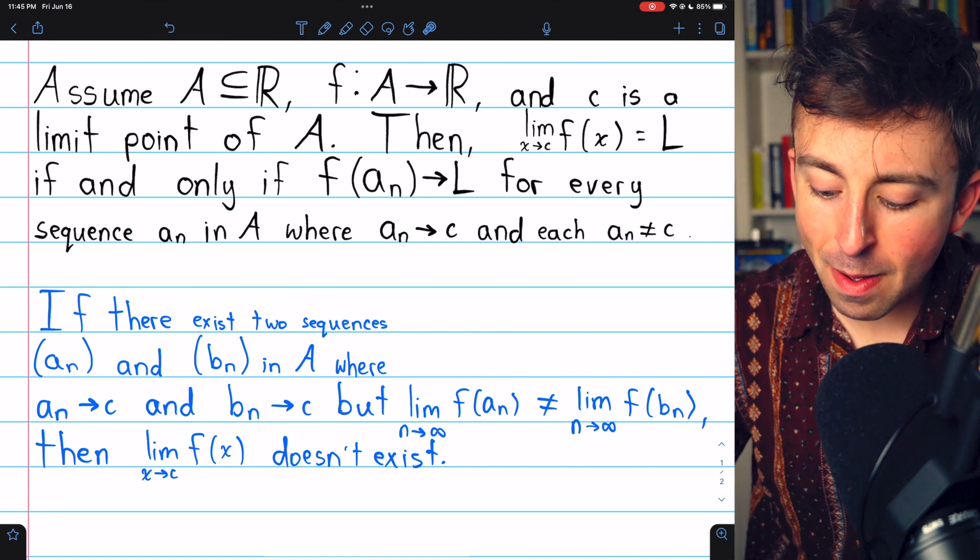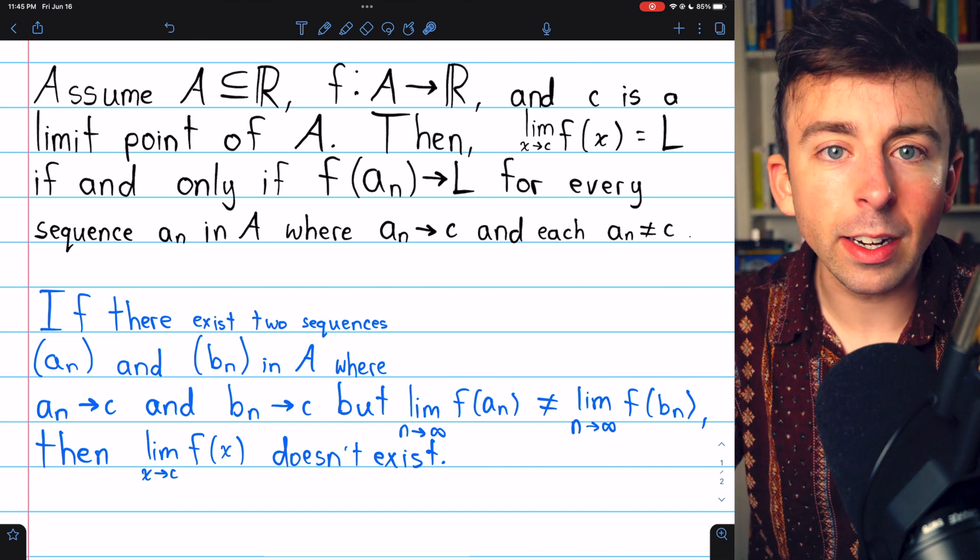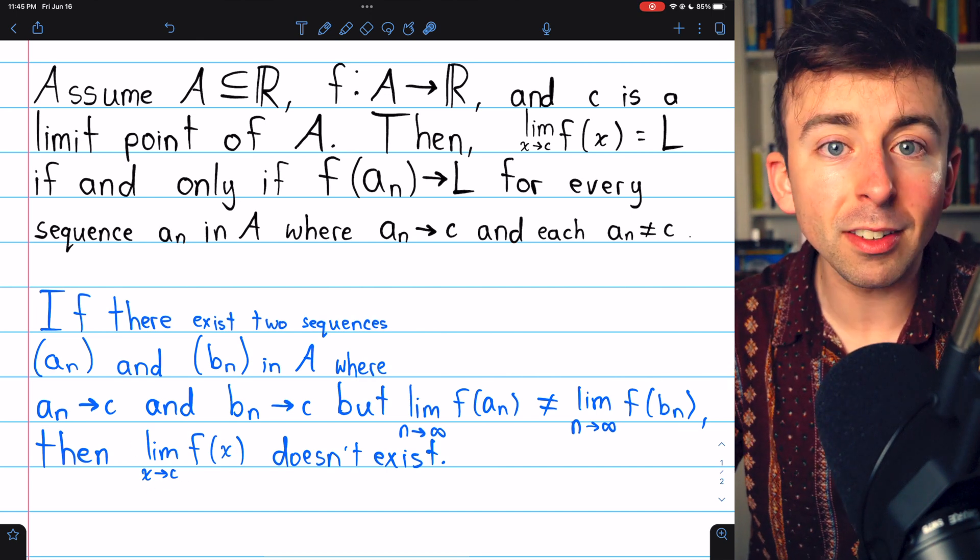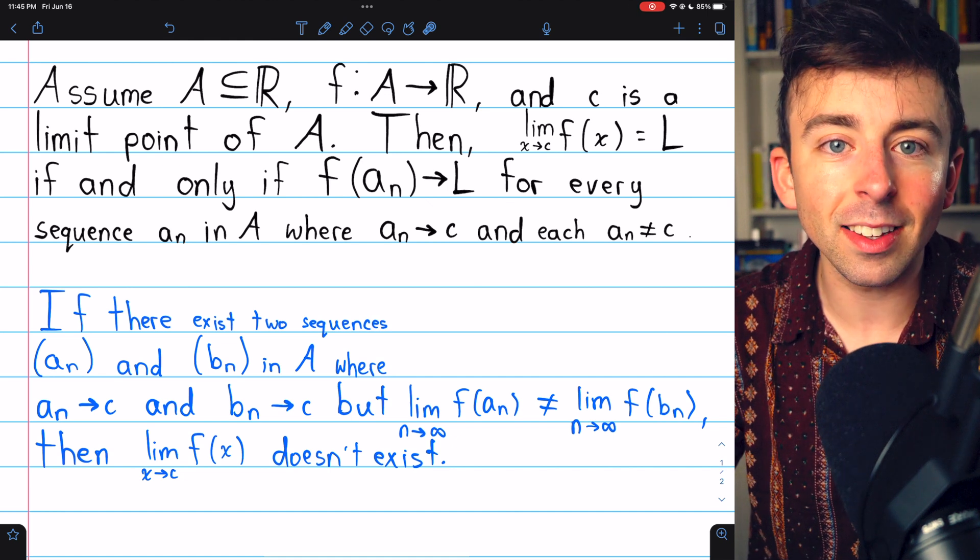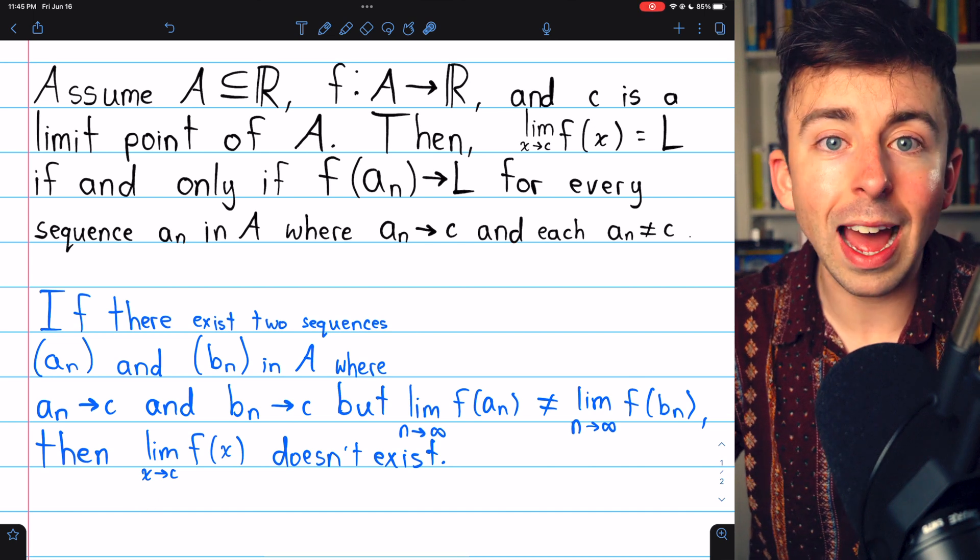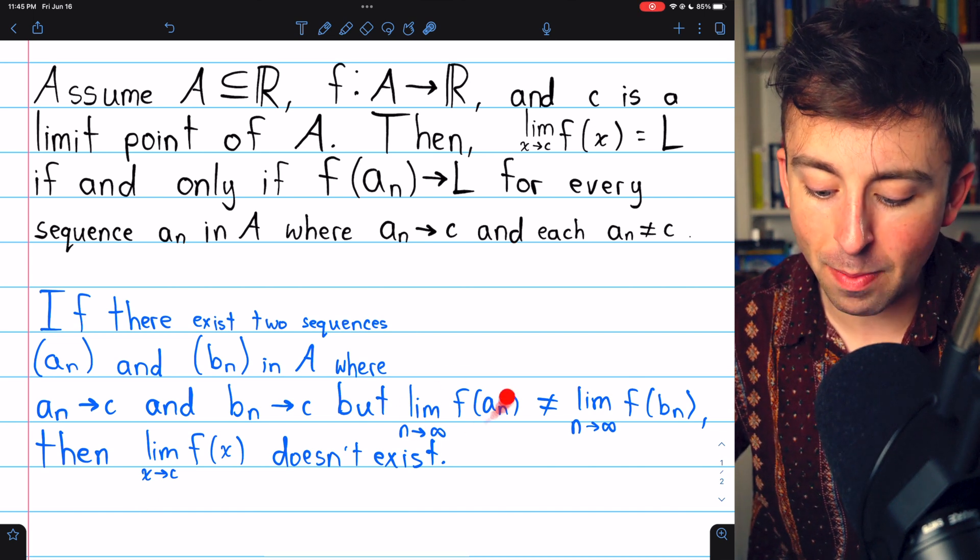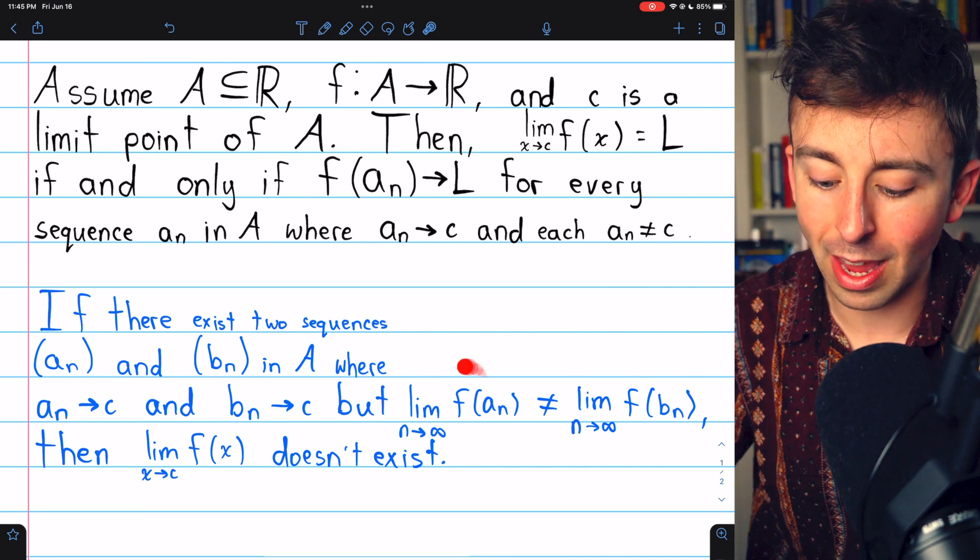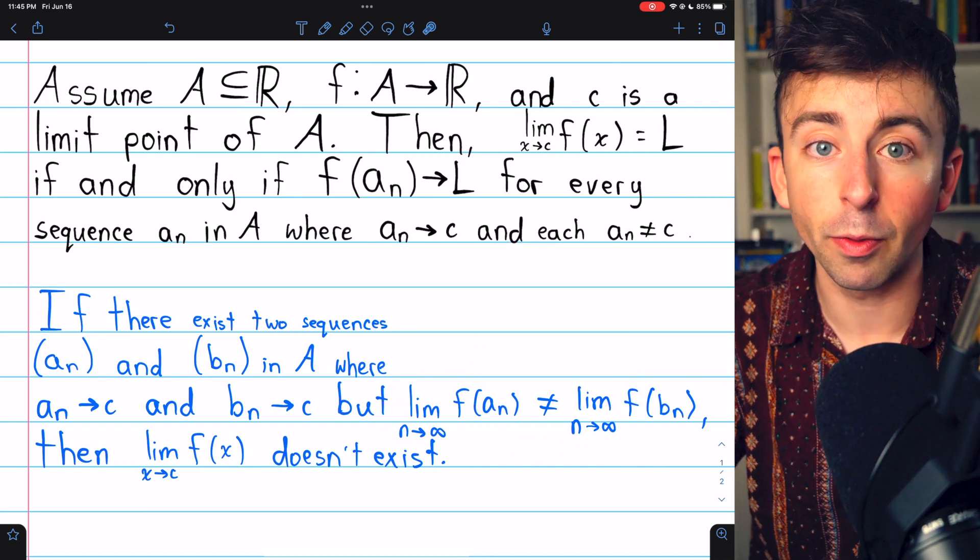but the limit of their images under the function are not the same, then the limit of the function as x approaches c must not exist. Because if it did exist, then every sequence converging to c would have to have a limit of images that also converges to c, and so we couldn't possibly have two sequences like this with different limits.